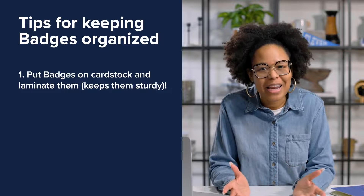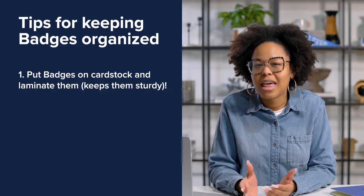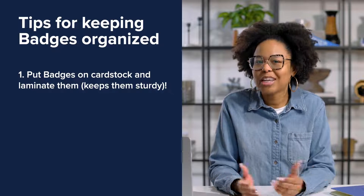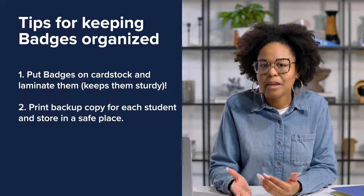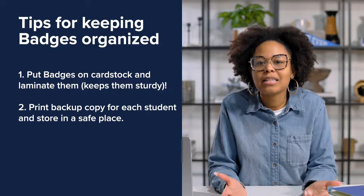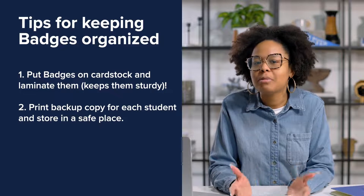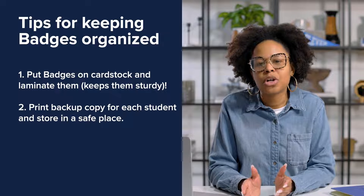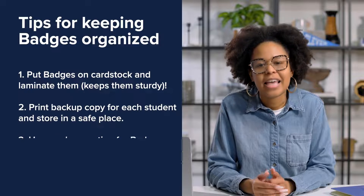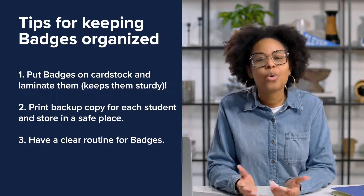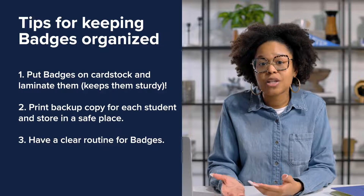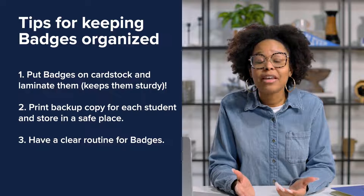Clever badges work best when they're organized and easily accessible for students. Here are a few tips we've heard from Clever champion teachers. Put badges on cardstock and laminate them — cutting out the badges, then putting them on cardstock and laminating them keeps them sturdy throughout the year. Print a backup copy for each student. We know that students might accidentally damage their badge by scrunching it up or getting something on it. Having a backup badge can help you keep things moving in class. Just be sure to keep them stored in a safe place, like a locked file cabinet. Have a clear routine for badges — whether you have students keep badges in their seat backs or you keep them on a keyring or something else, having a routine is key.